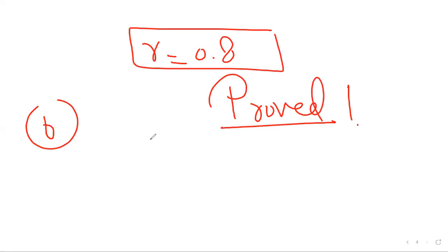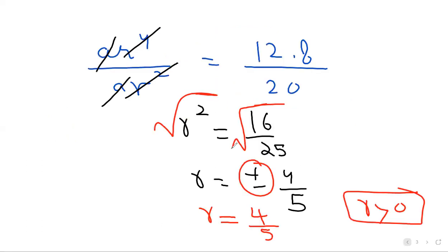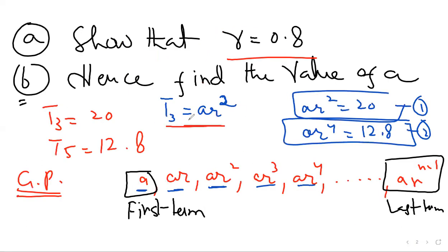The second part, we need to find the A value. There are two data given here: T3 and T5. It's your choice, you can use any of the equations.